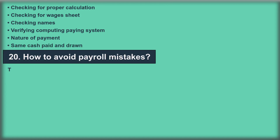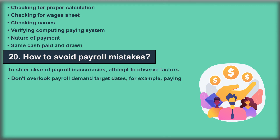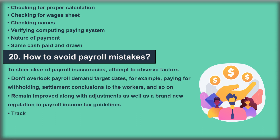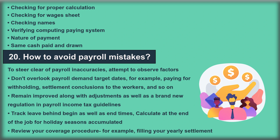Question 20: How to avoid payroll mistakes? To avoid payroll inaccuracies, observe the following: don't overlook payroll demand deadlines, for example paying for withholding and settlement conclusions to workers; stay updated with changes and new regulations in payroll income tax guidelines; track leave begin and end times; calculate accumulated holiday time at end of job; and review your reporting procedure, for example, filing your annual settlement document.